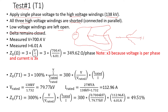Since there is no delta, we don't need that. In this case, the measured voltage is 700.4 volts and the current is 6.01 amps. The equation to calculate the zero sequence impedance in ohms is three times the measured voltage divided by the measured current: 3 × 700.4 / 6.01 = 349.62 ohms per phase.